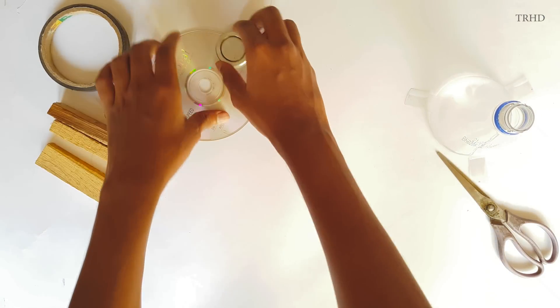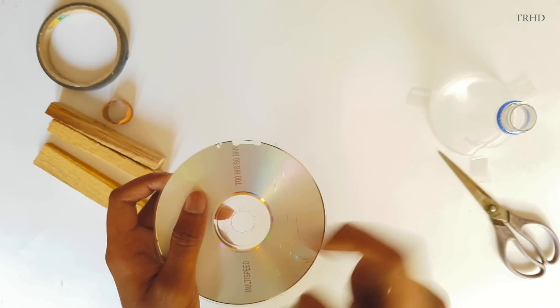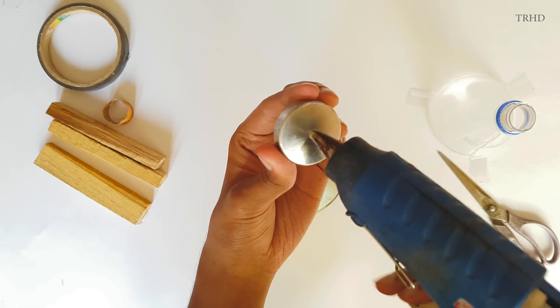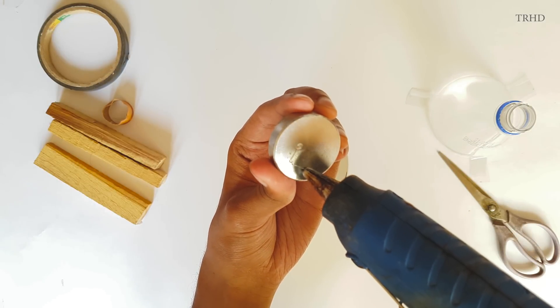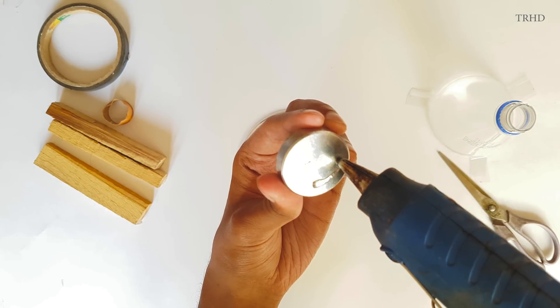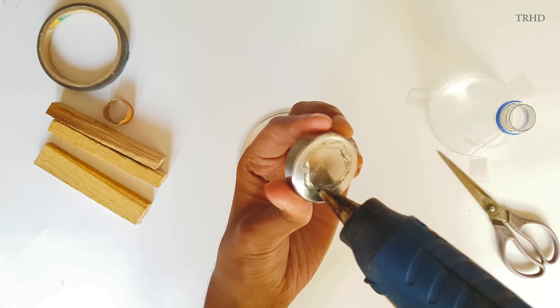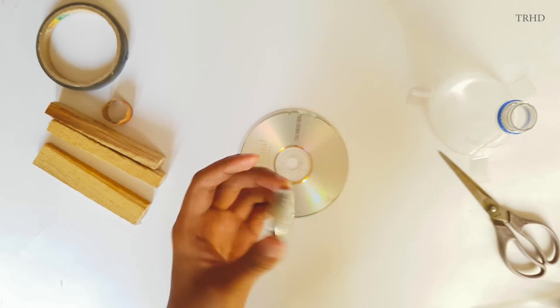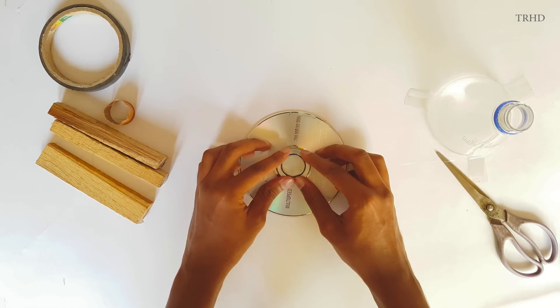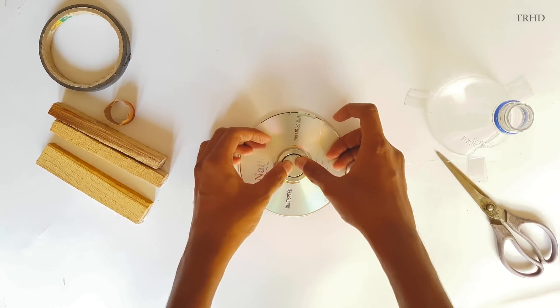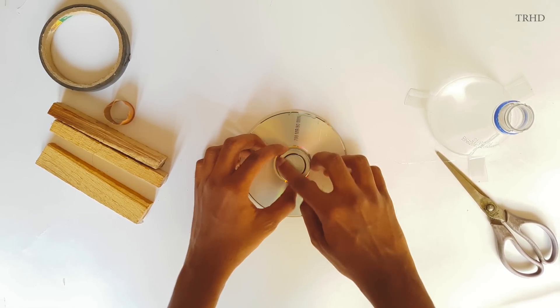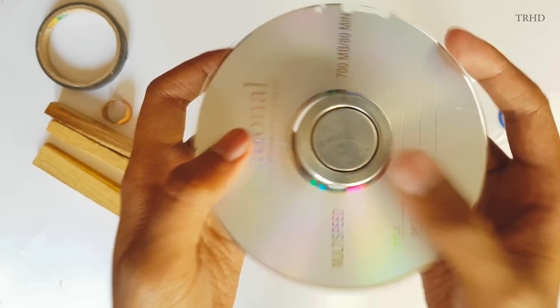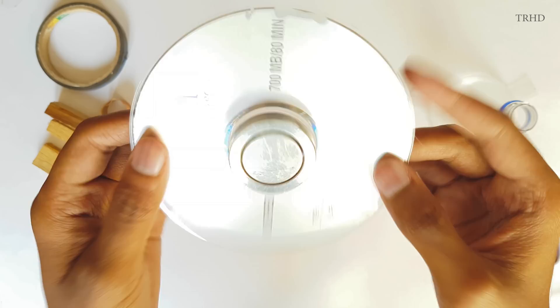Now keep it aside and take a CD. We need to stick this magnet onto that CD. You can use any kind of glue to stick it. I'm using a glue gun to stick the magnet to the CD. Just apply glue over it and stick it at the center of the CD. That's it, we fixed the magnet on the CD.